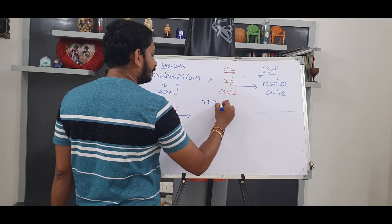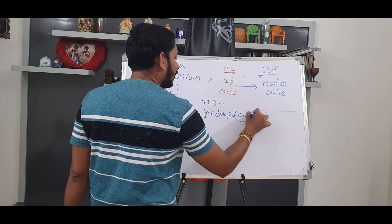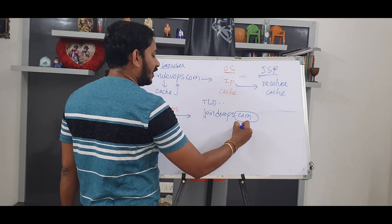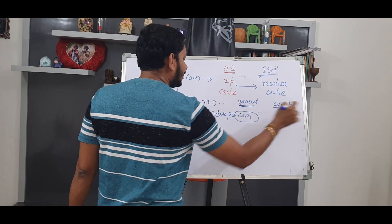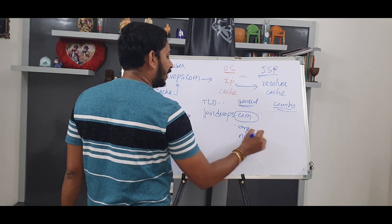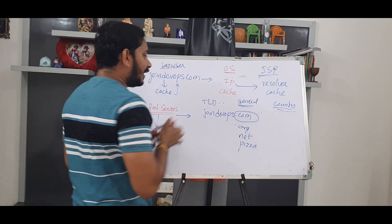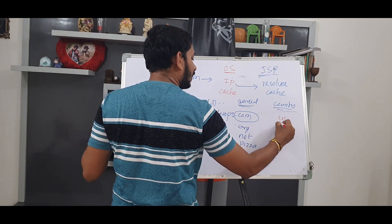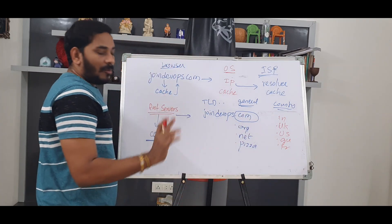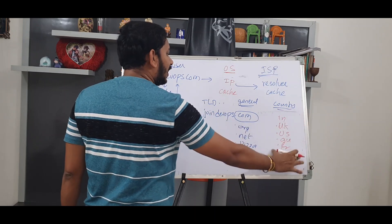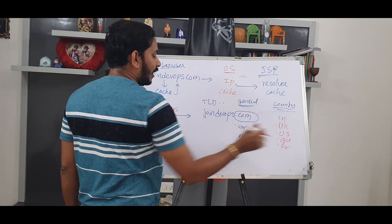The next step is the TLD Center — Top Level Domains. For example, JoinDevOps.com — the last part is .com. Domains are of two types: general domains and country-based domains. General domains include .com, .org, .net, and even .pizza. Country-based domains include .in, .uk, .us, .au. This is TLD.